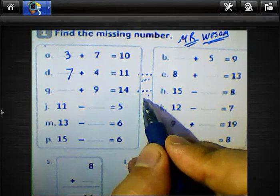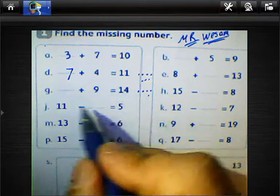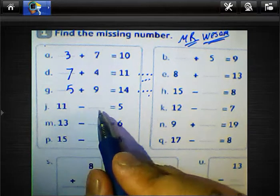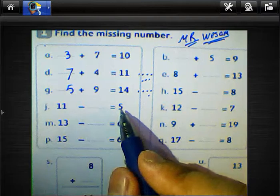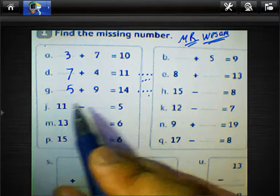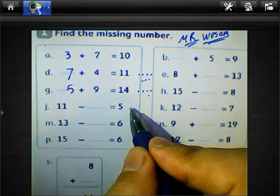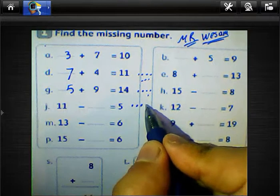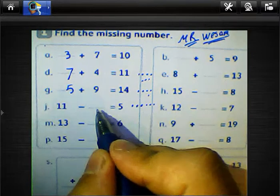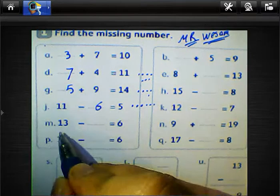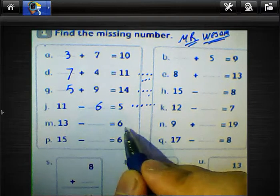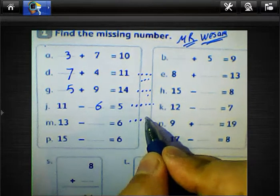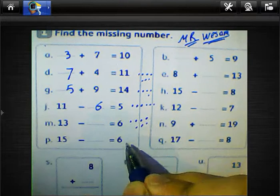The result will be 5. Next: 11 subtract blank equals 5. Count from 5 to 11 — just after 5: 6, 7, 8, 9, 10, 11 — the result will be 6. Then 13 minus 6: just after 6 — 7, 8, 9, 10, 11, 12, 13 — the result will be 7.